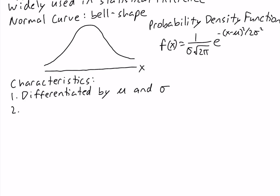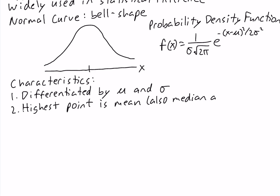The second characteristic is that the highest point in the normal distribution is also the median and the mode of the normal distribution. So in a normal distribution, the mean is equal to the median, which is equal to the mode.